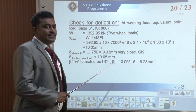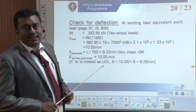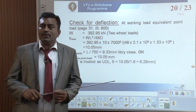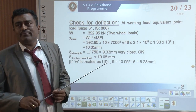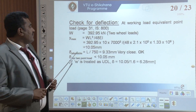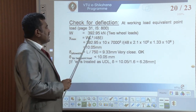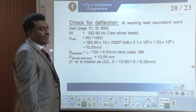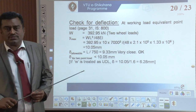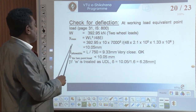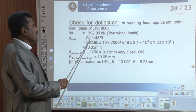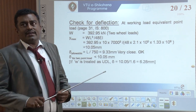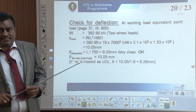Check for deflection — this is one of the necessary checks according to IS code. From page number 31, for working load equivalent point loads, W equals 392.95 kilo Newton (addition of all the loads). Y max — the maximum deflection — equals WL cubed divided by 48EI for a simply supported beam.